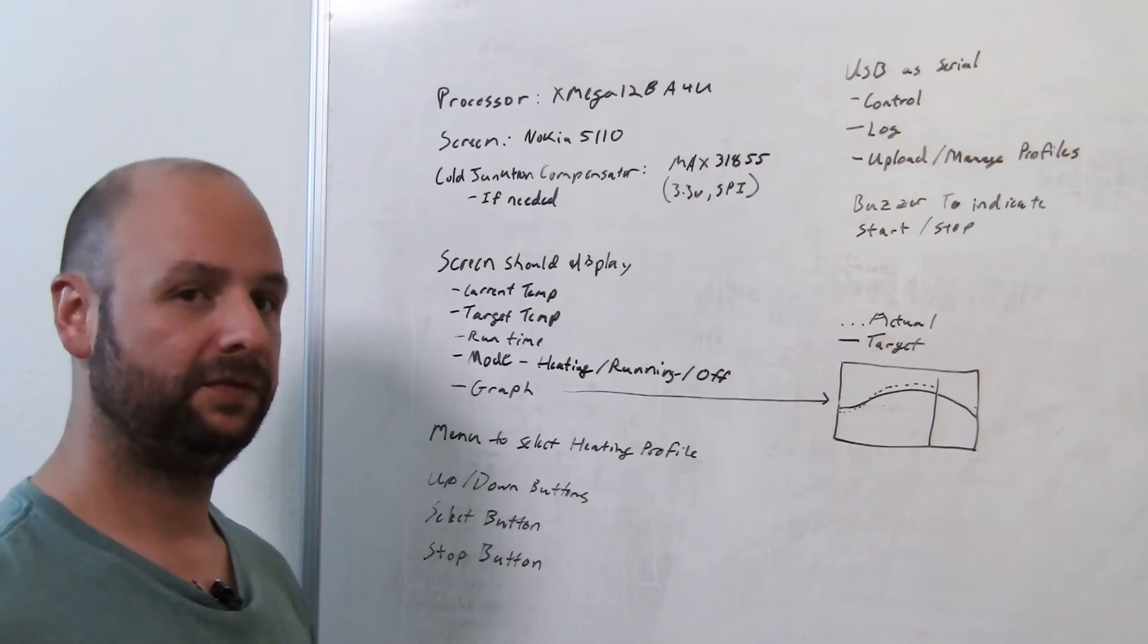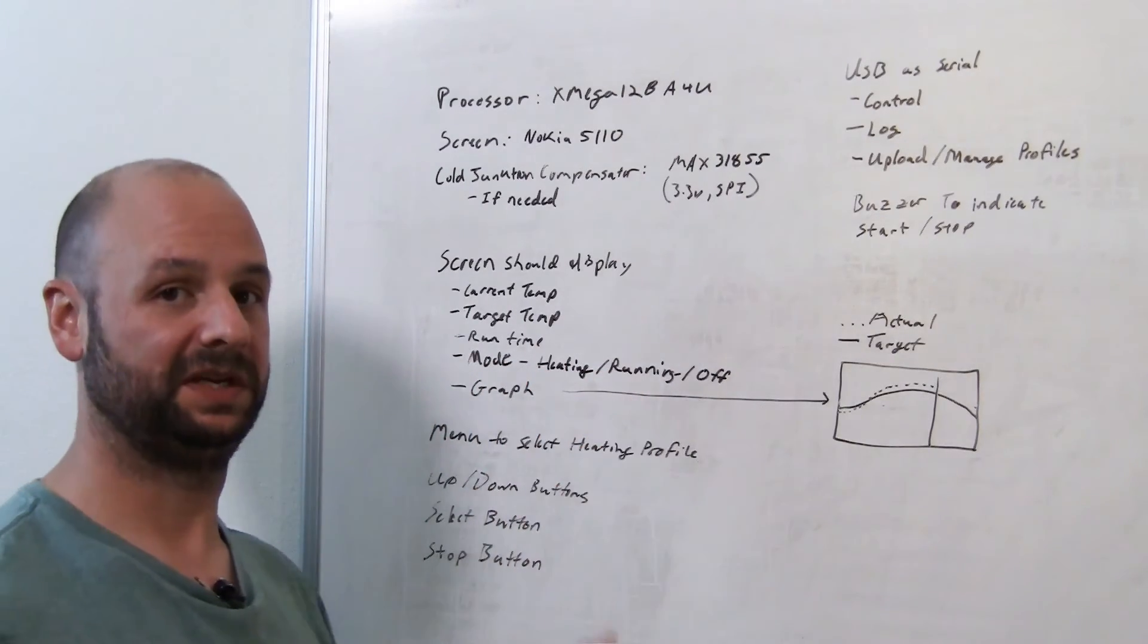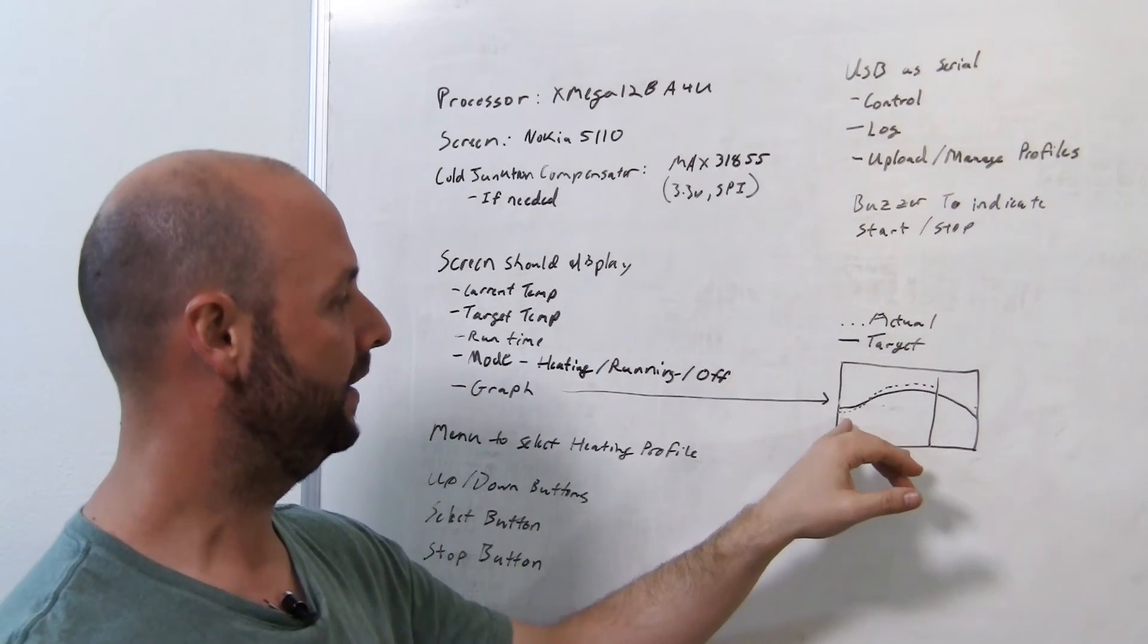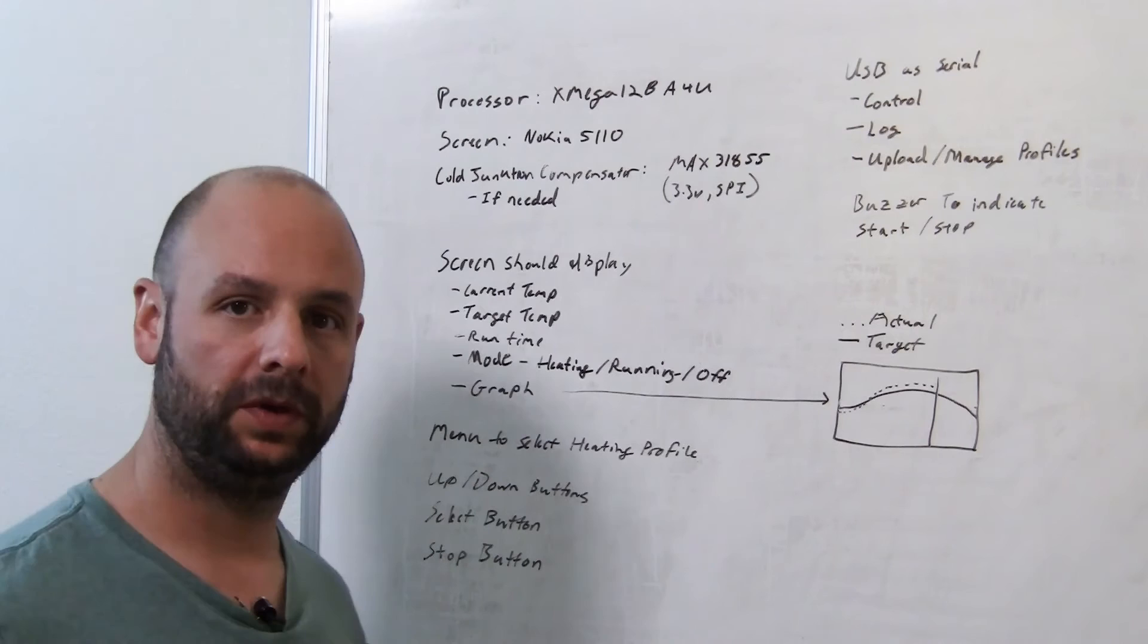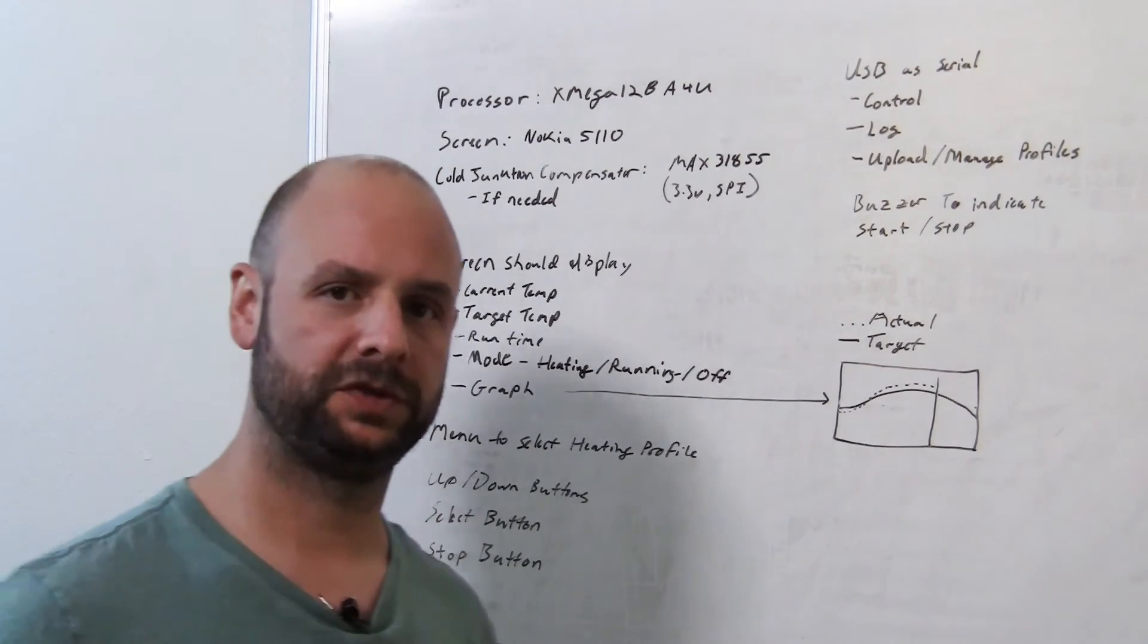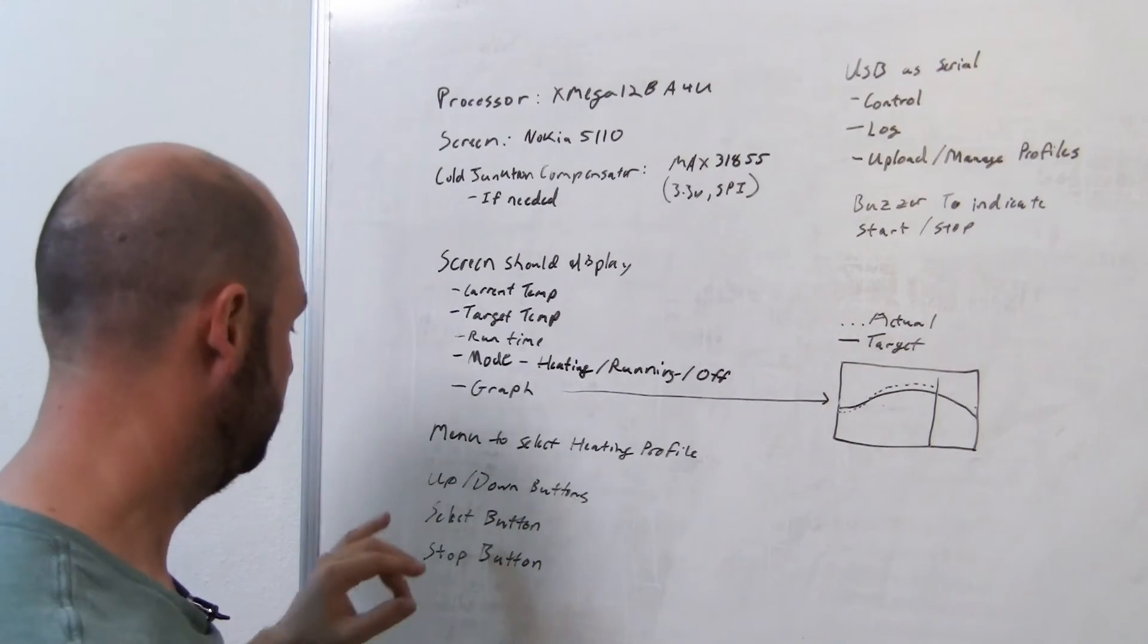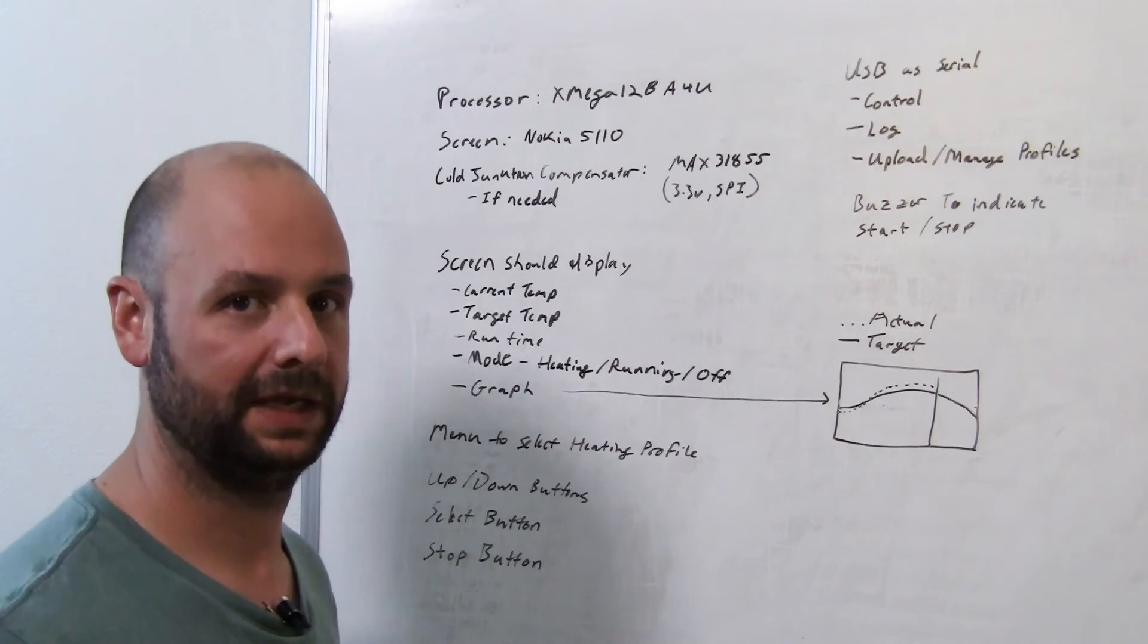On the screen, I want to display four pieces of information. I want to display the current temperature, the target temperature, the run time, and the mode it's in, like heating or just running or off. I also want to show a graph that displays the target temperature over time and the actual temperature at the current time using like a dotted line. I also want a menu mode that will allow me to select which profile. The idea behind that is you can store profiles on the chip inside flash. The profiles will just be made up of time and temperature pairs basically. I also want to add four buttons. I want an up down button so you can select things in the menu, a select button and a stop button. That may be actually just an emergency stop button and you can just smack it in case something goes wrong.